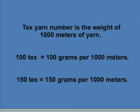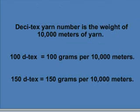A yarn numbered in the tex system would be the weight of 1,000 meters. Therefore, a 100 tex yarn would weigh 100 grams per 1,000 meters of yarn. Since the specified length for tex (1,000 meters) is smaller than that specified for denier (9,000 meters), a 100 tex would not be the same size as a 100 denier — it would be much larger. Desitex is a direct numbering system that uses 10,000 meters as the specified length. Since this length is similar to that of a denier, the resultant numbers would be similar in size.